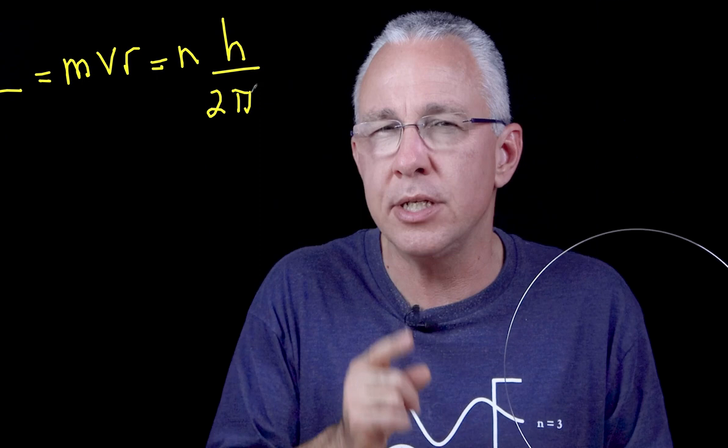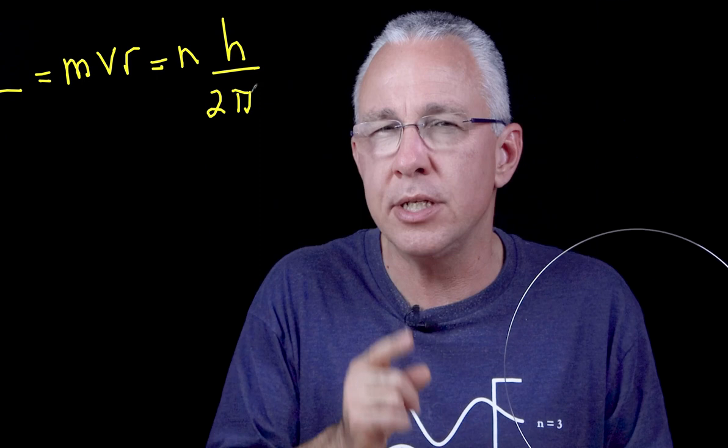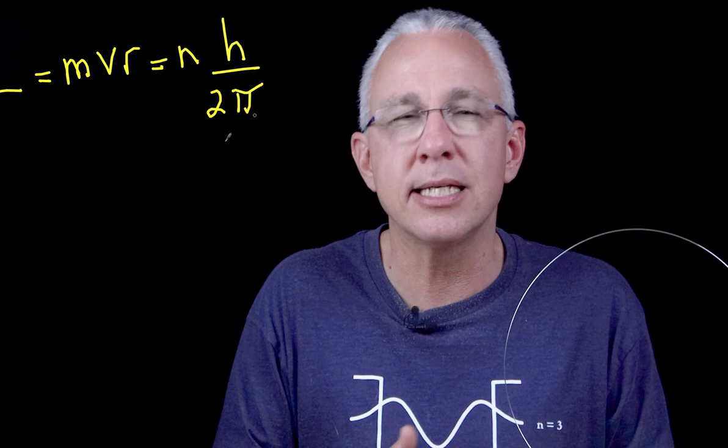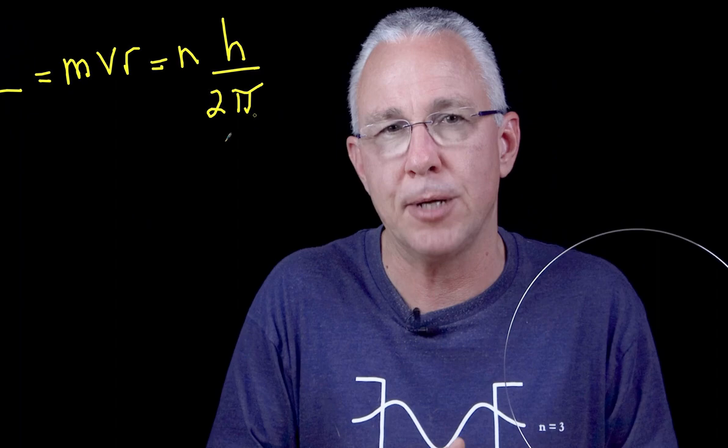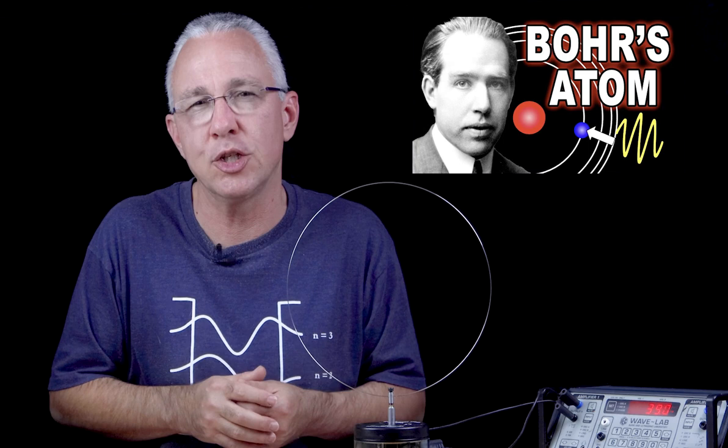So do you see the n there? Well those are integers and therefore what that is saying is that the angular momentum can only have very discrete whole numbers of specific values, obviously multiples of Planck's constant divided by 2 pi. Now I actually discussed this further in another video specifically on Niels Bohr so check that out. But what Bohr wasn't able to do was to say why these orbits can only have discrete values. And this is where Louis de Broglie steps in.